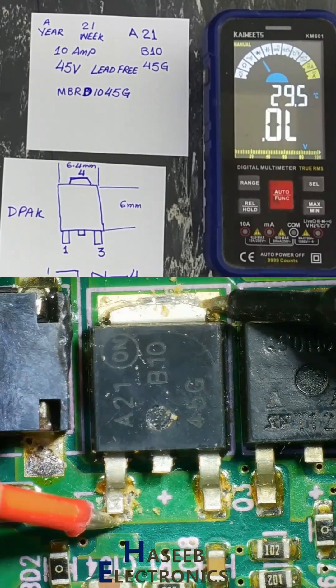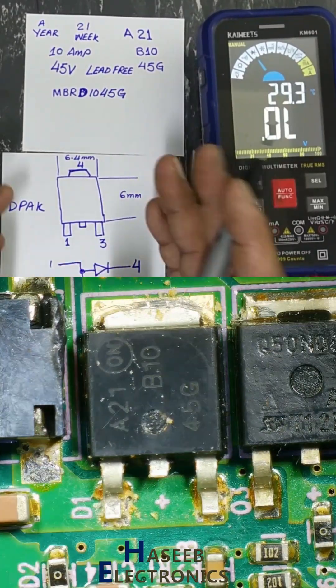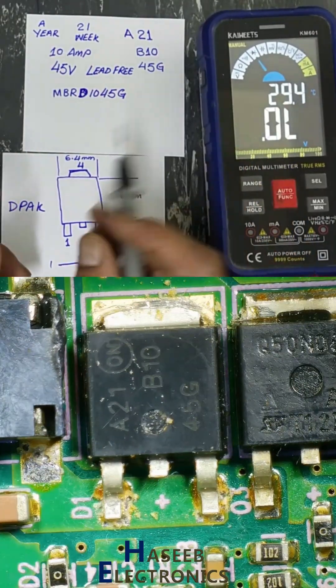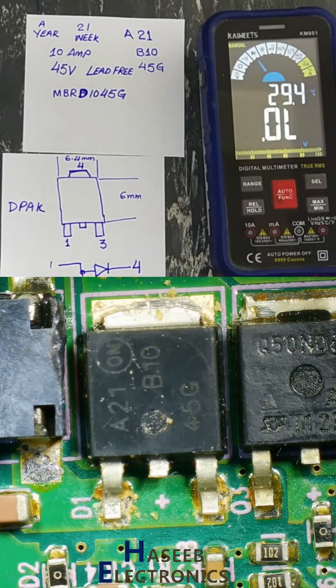10 ampere average rectified forward current, 45 volts. You can subscribe my channel for more videos. Thanks for watching.